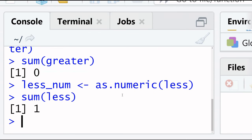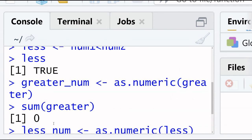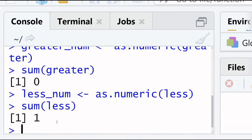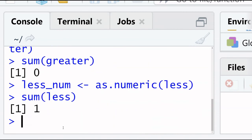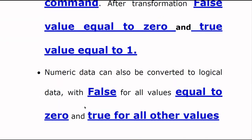One. So as we see true is equal to, here less is true, true is equal to 1 and false is equal to 0. Now move to the next point.